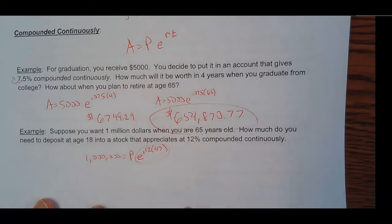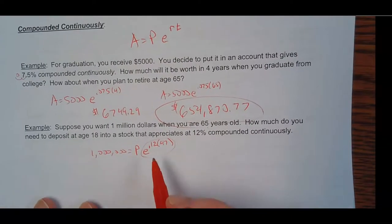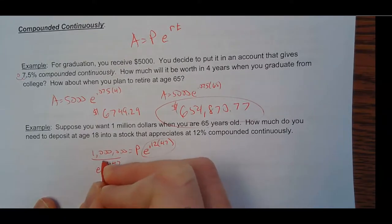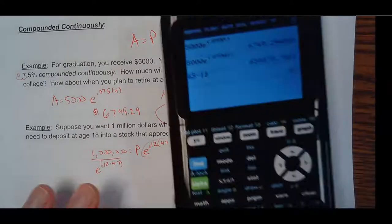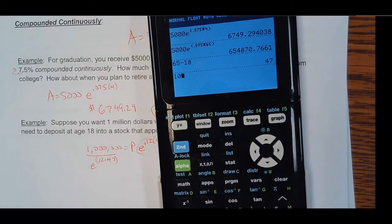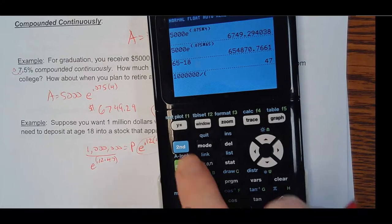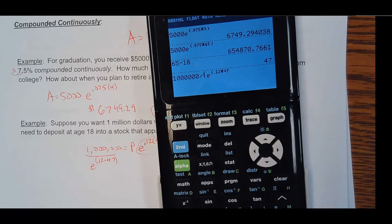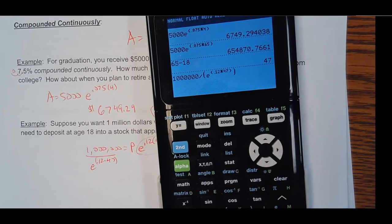So first off, this is a constant. That's a number. If I put in the calculator, I can find a number. So I'm going to divide by E to the 0.1 times 47 power. So in my calculator, I'll have 1 million divided by, and then parentheses, E to the, and then parentheses, 0.12 times 47 power. And all your parentheses.